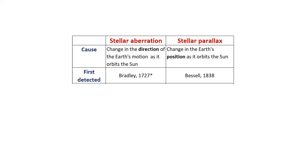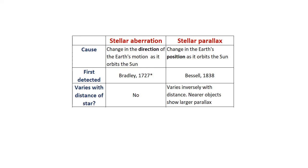Stellar aberration doesn't vary with the distance of the star, it just depends on the position of the star in the sky. Stellar parallax varies inversely with the distance. So nearer objects have a bigger parallax.